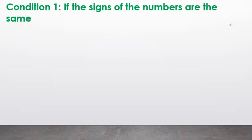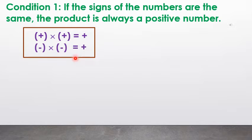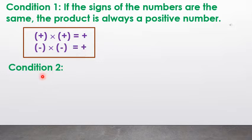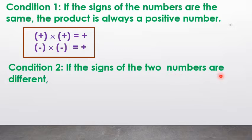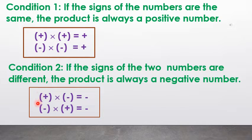Condition 1: if the signs of the 2 numbers are the same, the product is always a positive number. Plus into plus equals plus, and minus into minus equals plus. Condition 2: if the signs of the 2 numbers are different, the product is always a negative number. Plus into minus equals minus, or minus into plus equals minus.